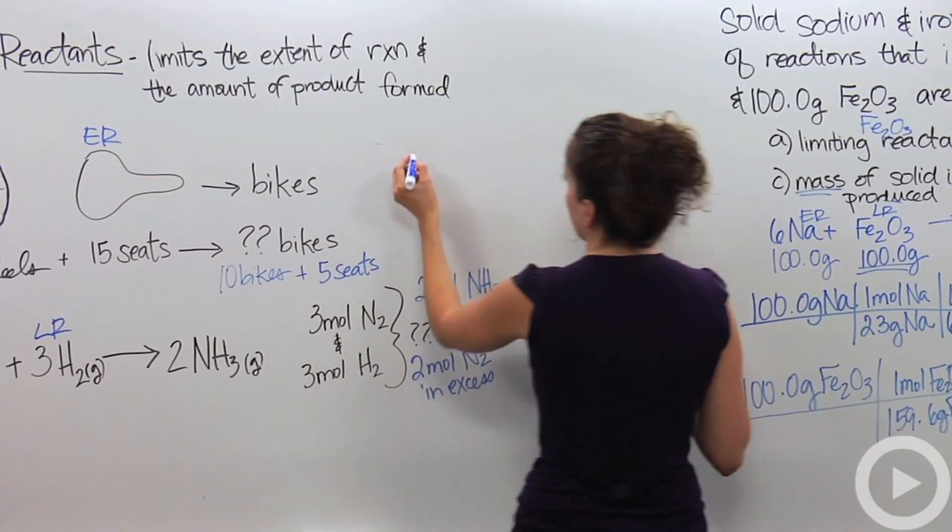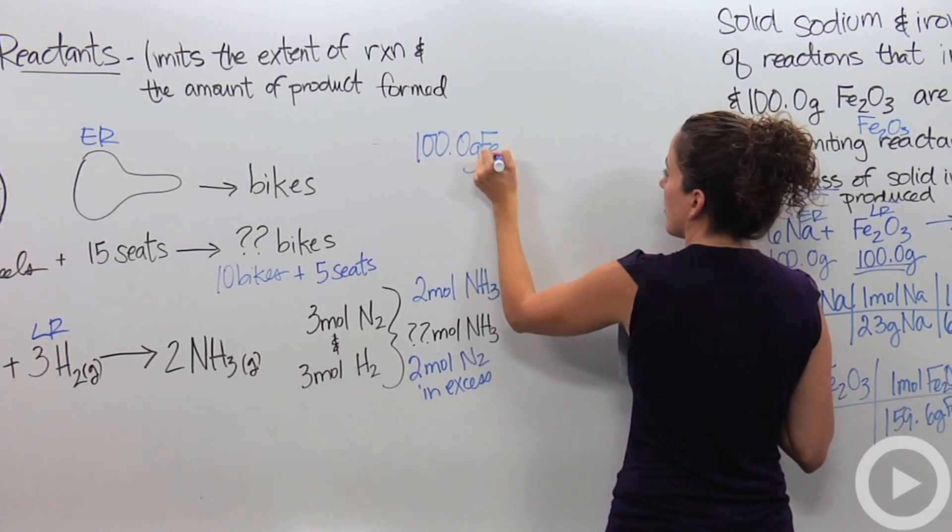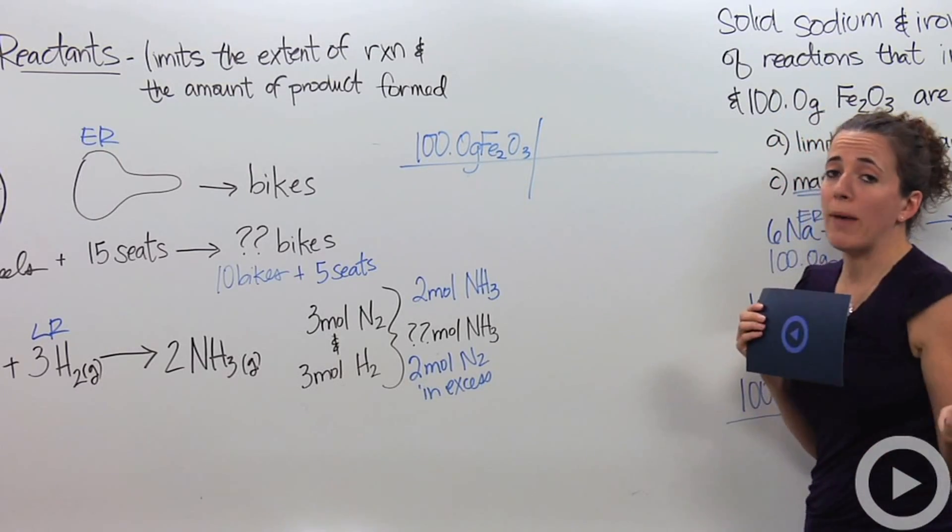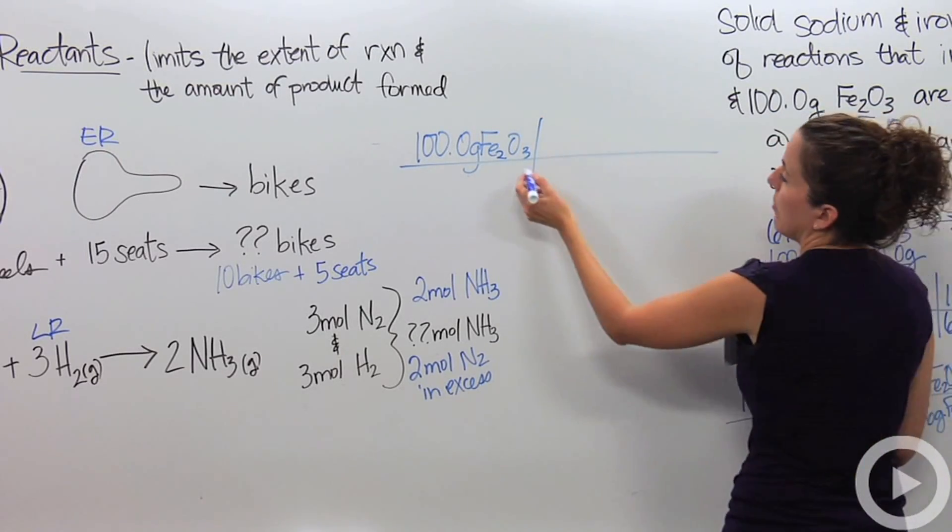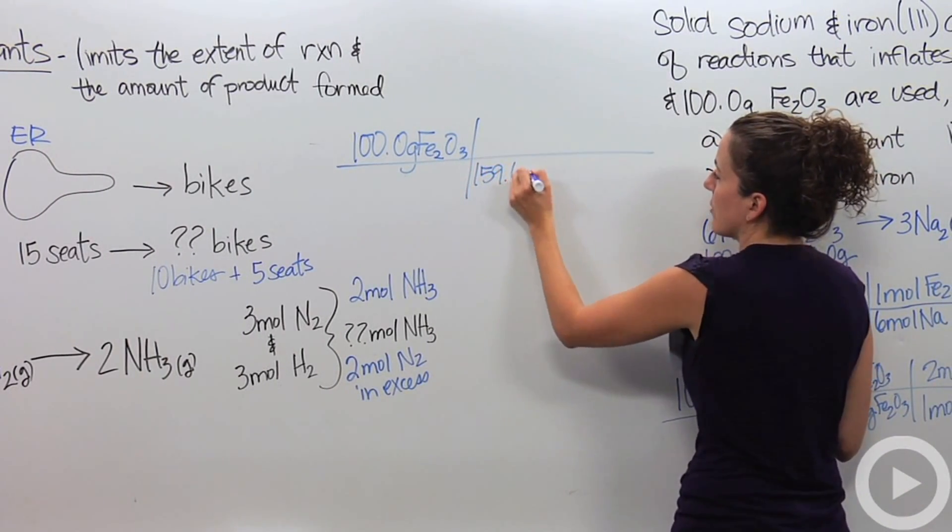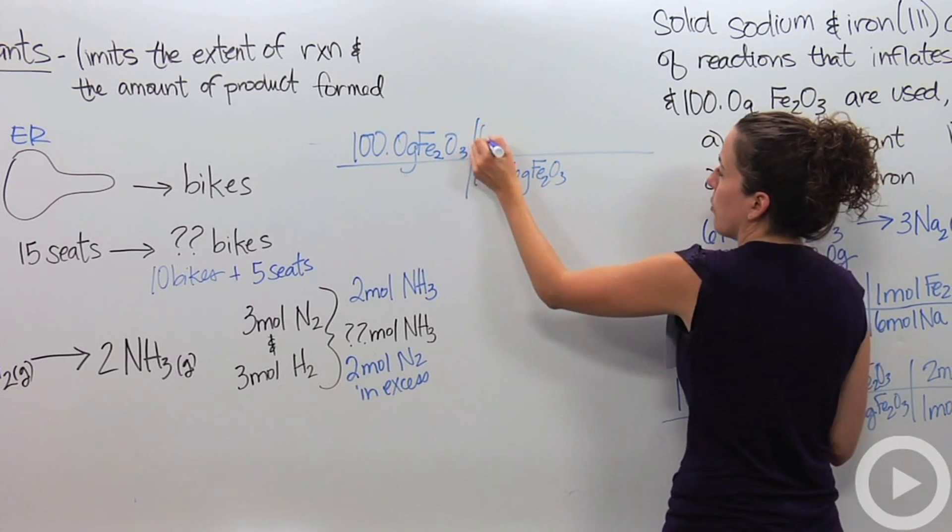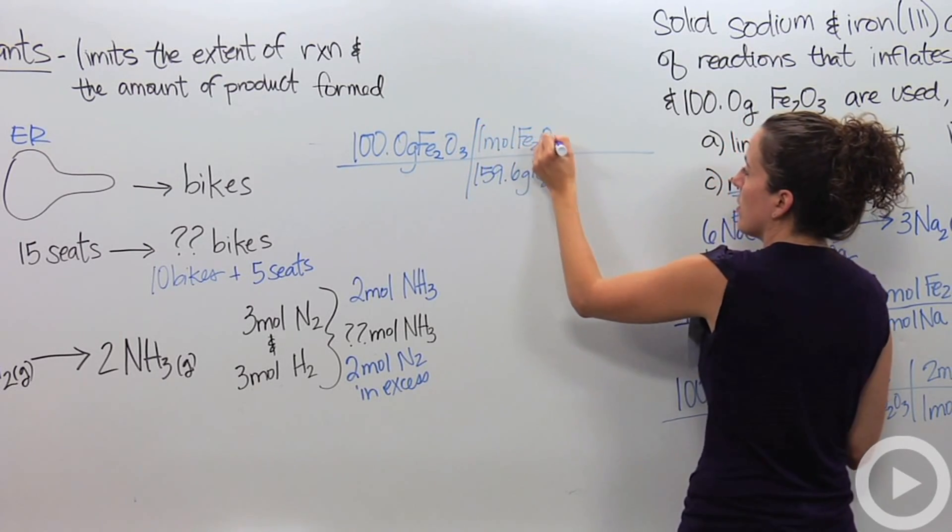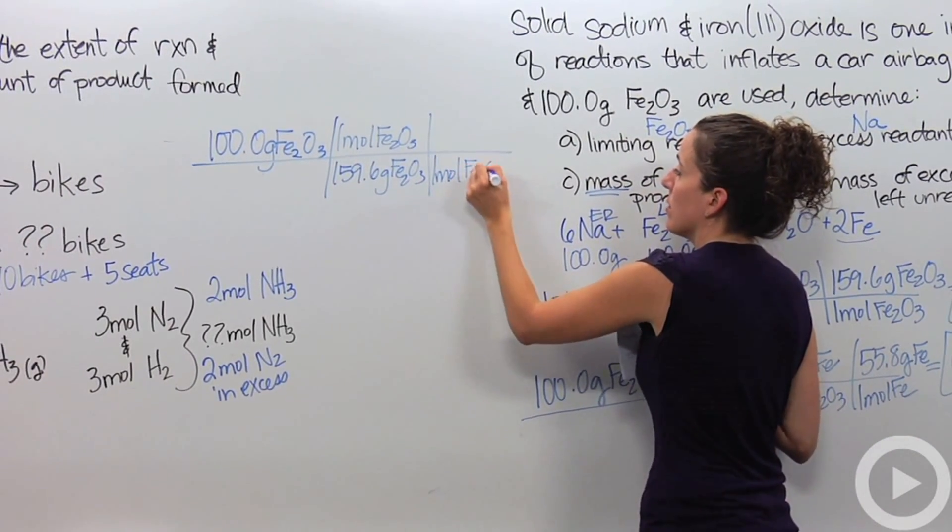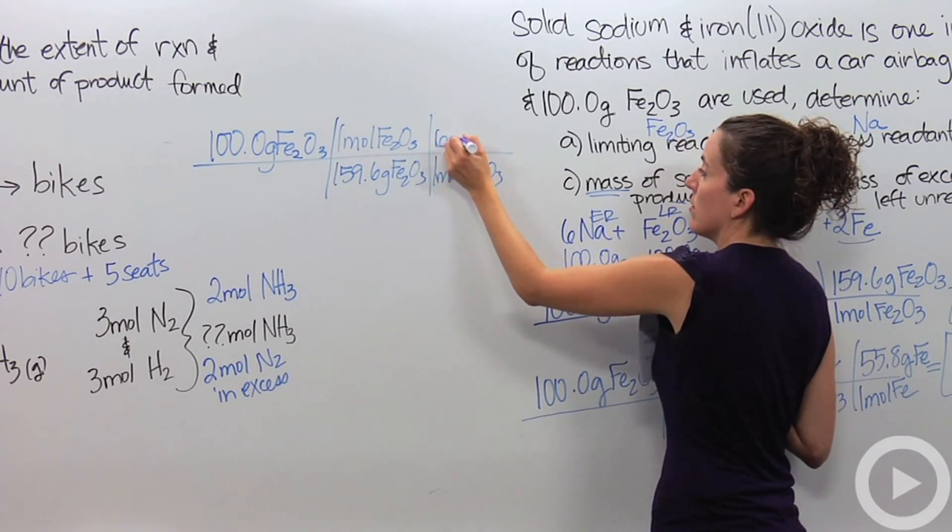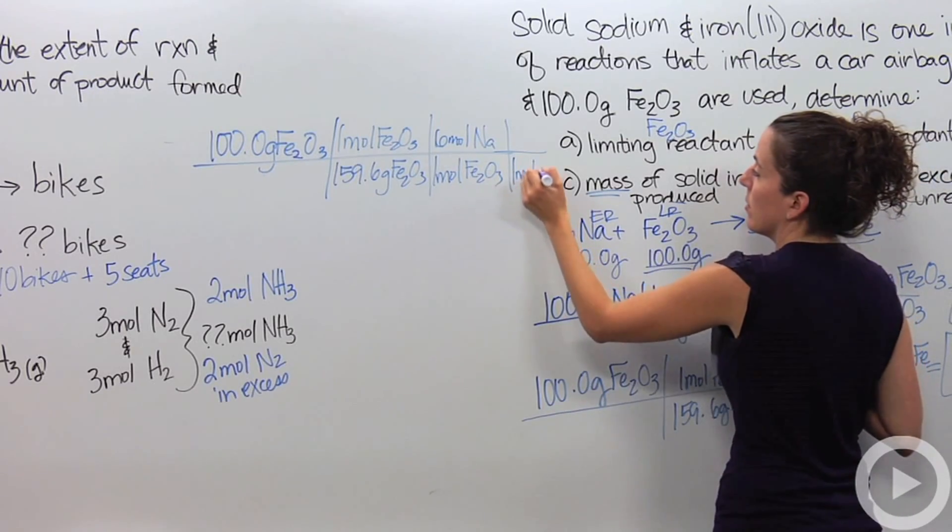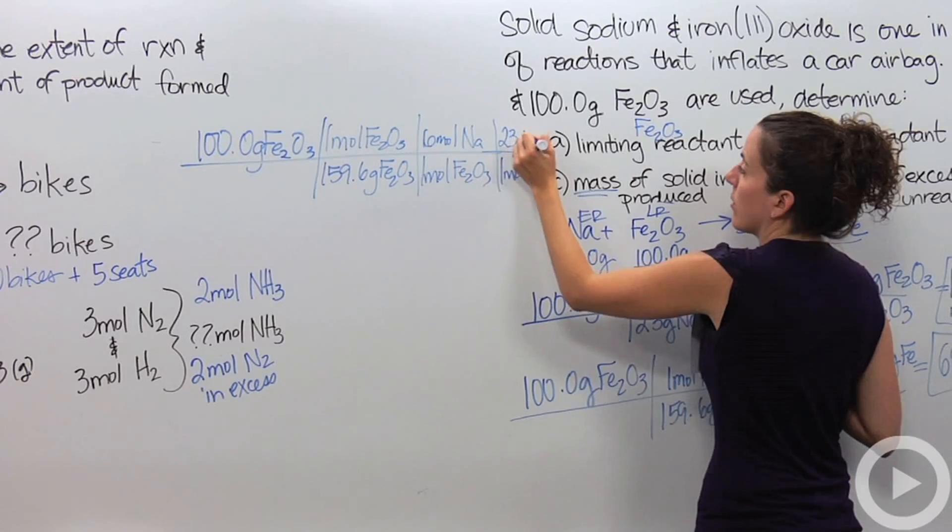I have 100 grams of iron three oxide, Fe₂O₃. I know I'm going to have to do a mass-to-mass ratio to get to moles. So, 100 grams, it is 159.6 grams for every one mole of Fe₂O₃. Looking at my reaction, I have one mole of Fe₂O₃ for every six moles of sodium. And I'm going to get the mass of sodium, so I'm going to say one mole of sodium is 23, looking at my periodic table, grams of sodium.